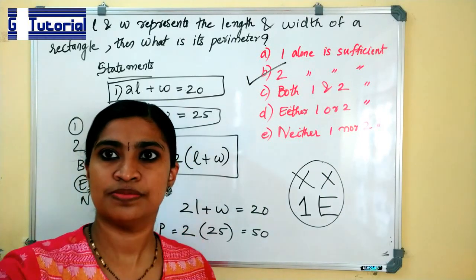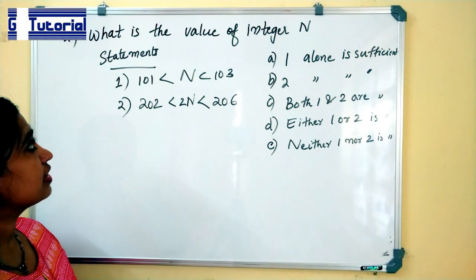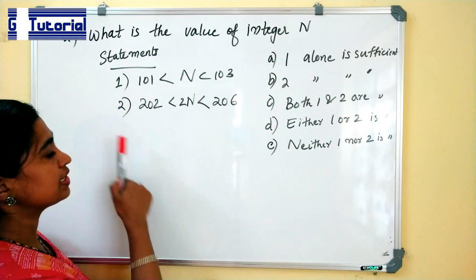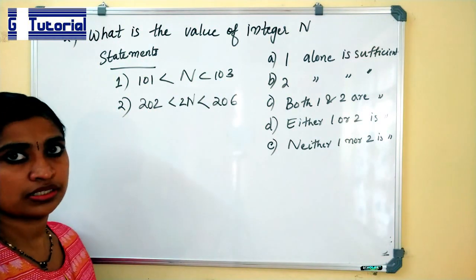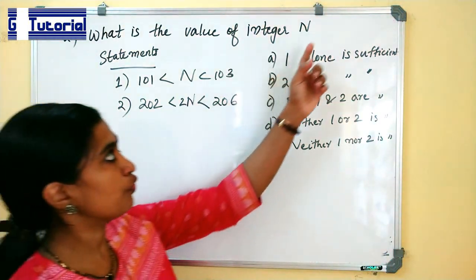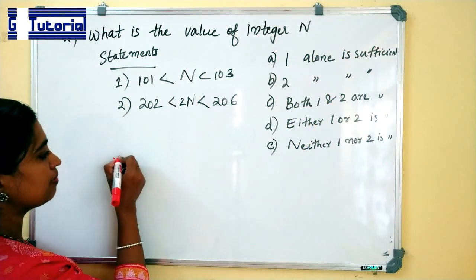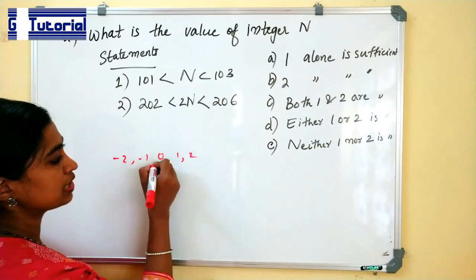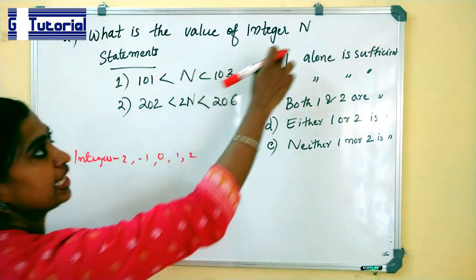Now we can check the next question. What is the value of integer N? The statements given are: statement one — 101 less than N less than 103; and statement two — 202 less than 2N less than 206. This is also a value type question. Here we are asked to find the value of integer N. Integers are numbers: negative numbers, minus 2, minus 1, 0, 1, 2, etc.